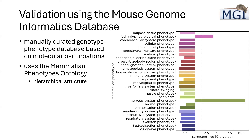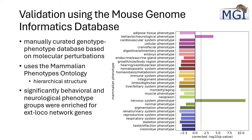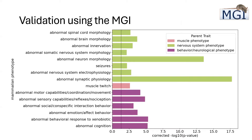The only terms that are enriched are behavioral/neurological phenotype and nervous system phenotype. Going a bit deeper, significantly enriched communities include various nervous system development and morphological traits. Behavior is really interesting — normal motor capability and movement came out, which includes locomotor activity. So we know we're pulling locomotor activity back out again; it's not just getting dissipated into the noise.